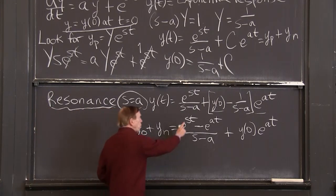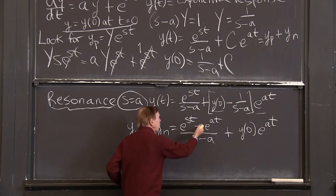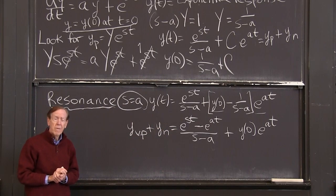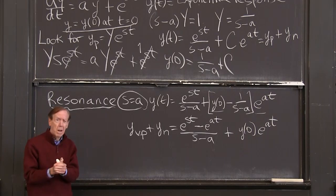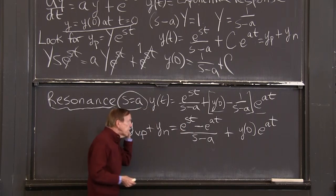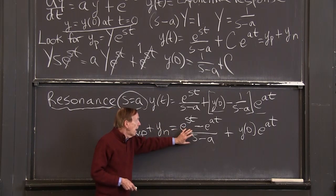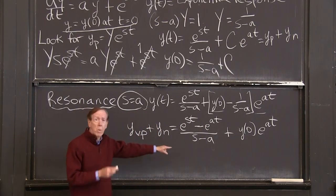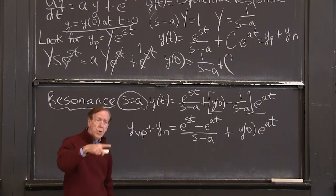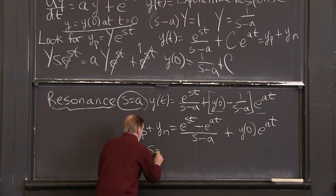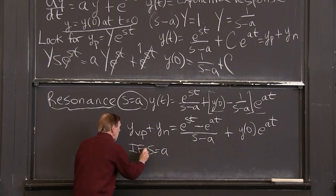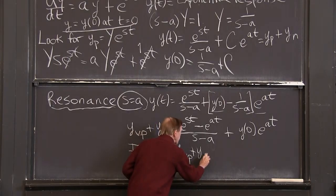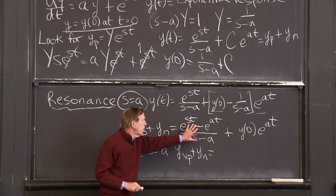Well, you might say it's infinite because I'm dividing by 0. But notice the part above is also 0. If s equals a, this is e^(st) minus e^(at). Those are the same. So I have a 0 over 0 situation. My formula is breaking down, but it isn't dying. It just needs more thinking. The case of resonance needs to... I have to understand what this is when s equals a. Let me tell you what it is and then show you why.